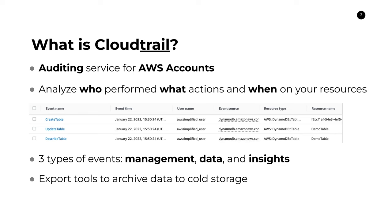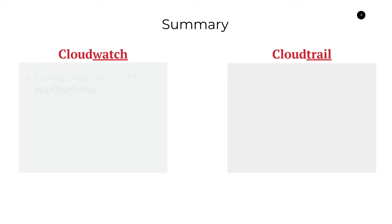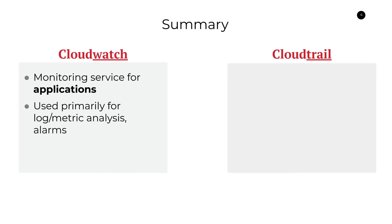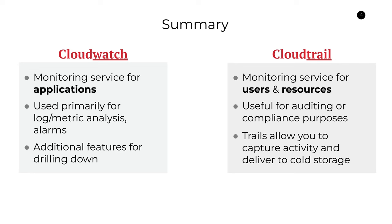So just as a quick summary: CloudWatch is a monitoring service for AWS applications, used primarily for log and metric analysis and the creation of alarms, with additional features meant for drilling down into your application health. CloudTrail is very different — it's a monitoring service for users and resources, useful for auditing or compliance purposes, and trails allow you to capture activity and deliver it to cold storage. To learn more about CloudWatch, check out the linked video where I walk you through the console. Don't forget to like and subscribe.